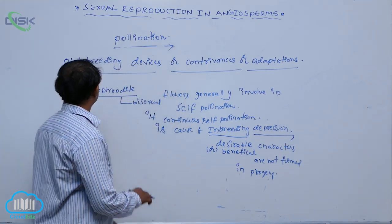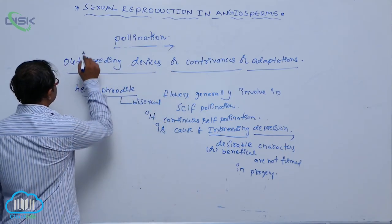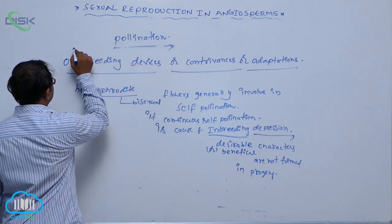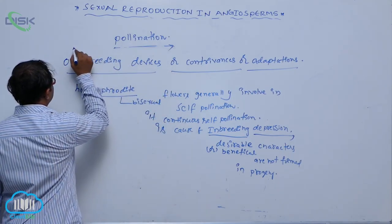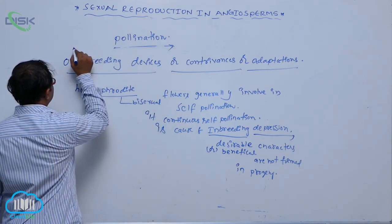These adaptations or devices are known as outbreeding devices. So these outbreeding devices lead to what is known as cross-pollination. Outbreeding means cross-pollination.